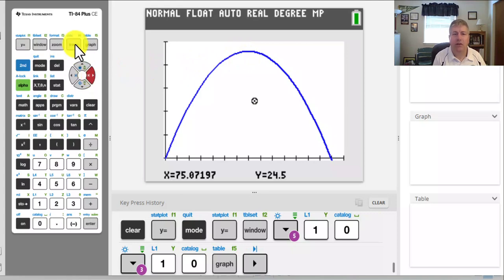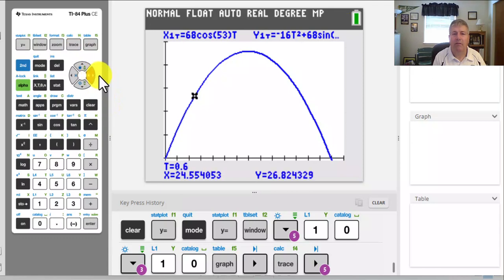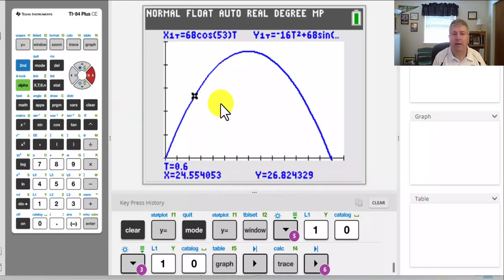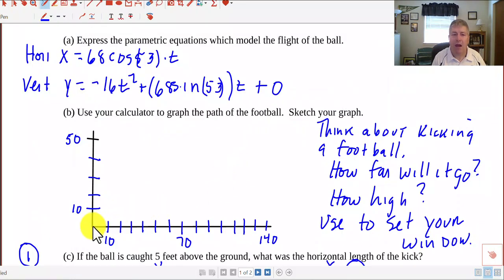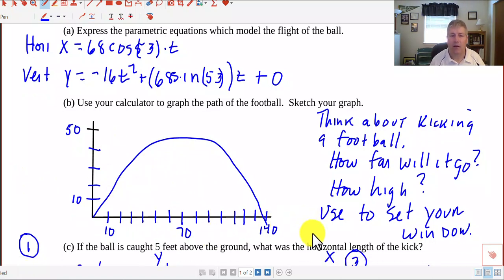And then you can certainly use the trace key. You can trace along here and find different x and y values at particular times. We've got some helpful information from our graph. So we go back and sketch our graph. Since we kick it from the ground, the graph is going to look something like that. That's a pretty decent sketch of what we have here with our label. Make sure you label and put your tick marks and everything on your graph.